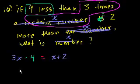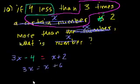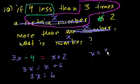And then we solve the equation. So let's see, you could add 4 to both sides. You get 3x equals x plus 6. Subtract x from both sides, you get 2x equals 6. Divide both sides by 2, and you get x equals 3.